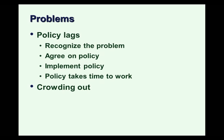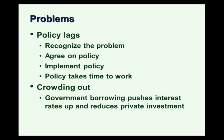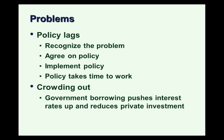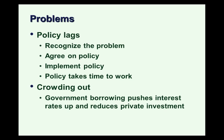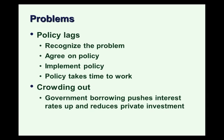Another problem with fiscal policy is called crowding out. This is the concern that if the government borrows money to finance an increase in spending, they're going to push up interest rates for everybody. Higher interest rates would discourage private investment. So the government comes in to borrow and spend and they push out private investment, meaning the spending might not be as expansionary as hoped. Both of these problems — policy lags and crowding out — suggest that enacting fiscal policy isn't as simple as it looks in the graph.